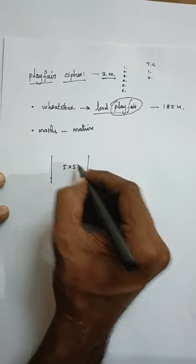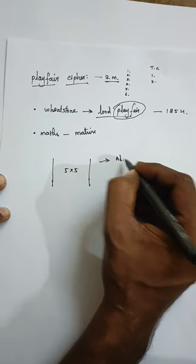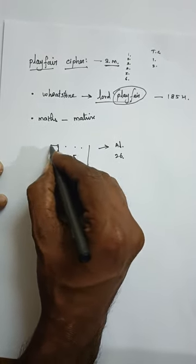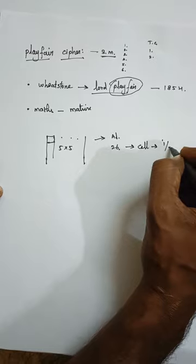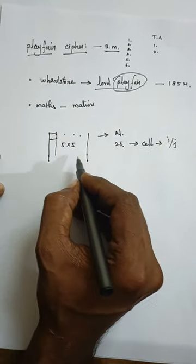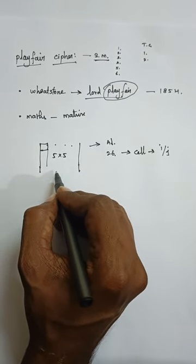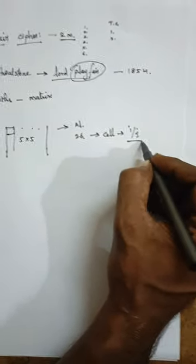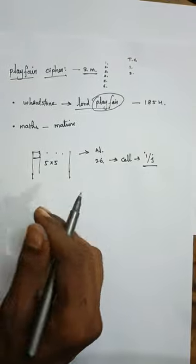Now we're going to check out the structure of the Playfair cipher. This algorithm uses a five-by-five key matrix. You have to insert all alphabetic English letters into it. We have 26 letters but only 25 cells, so one cell will have two letters - those letters are I and J. Basically, the Playfair cipher is a matrix cipher that can hold 25 letters, with I and J sharing a single box.